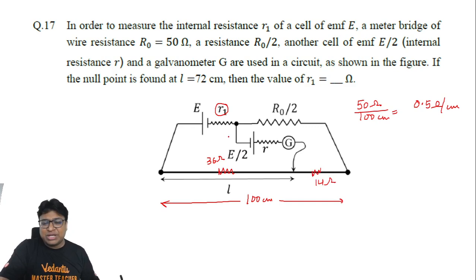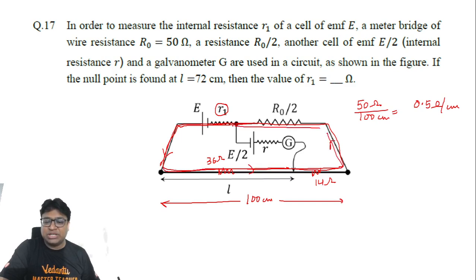Since the galvanometer is showing zero deflection, it means that there is no current in this branch, which basically means that the current is flowing like this. Is that correct? Do you agree with this idea? If the galvanometer branch is not having any current in it or it's showing zero deflection, then the current must flow like this. So it's basically a single loop circuit.